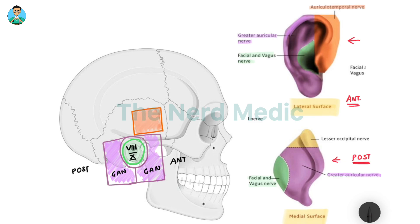Now focus on the superior medial part of the anterior aspect — it is supplied by the auriculotemporal nerve. In our image, the superior part of the anterior half of the pinna is supplied by the auriculotemporal nerve.